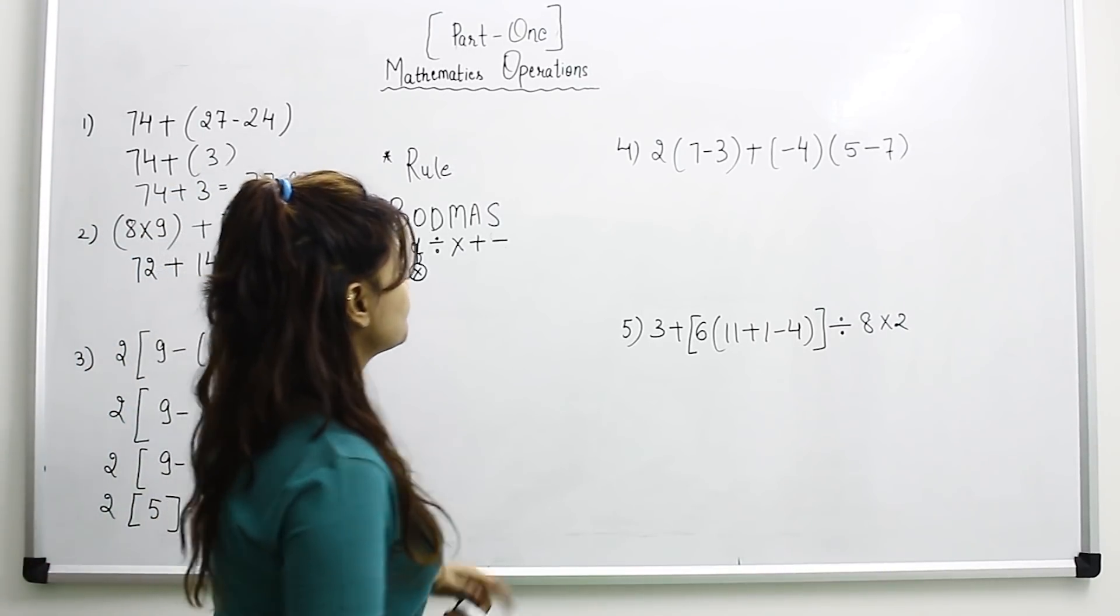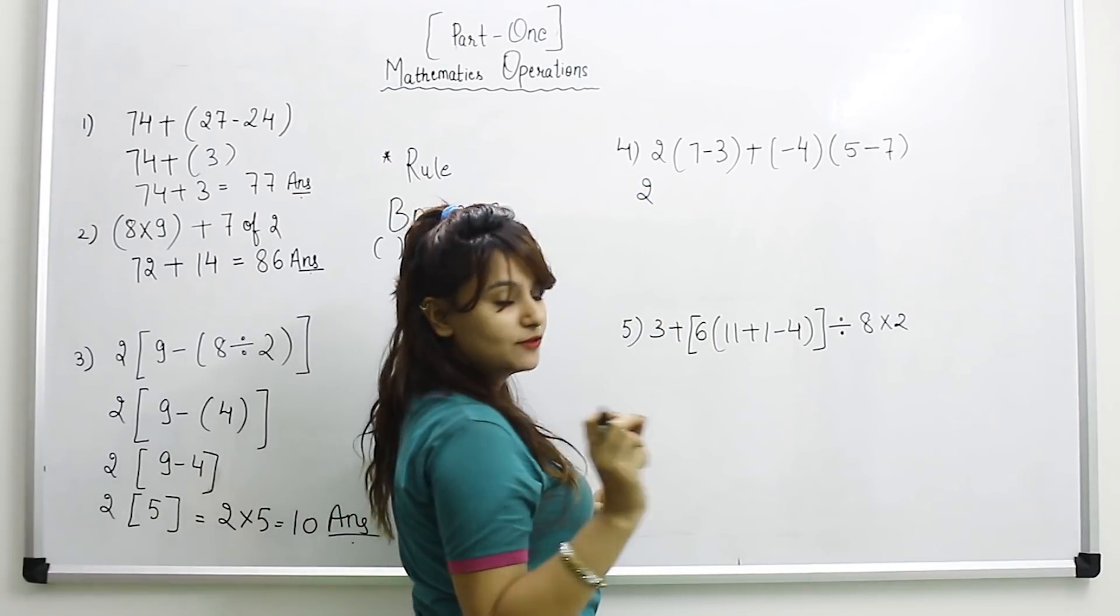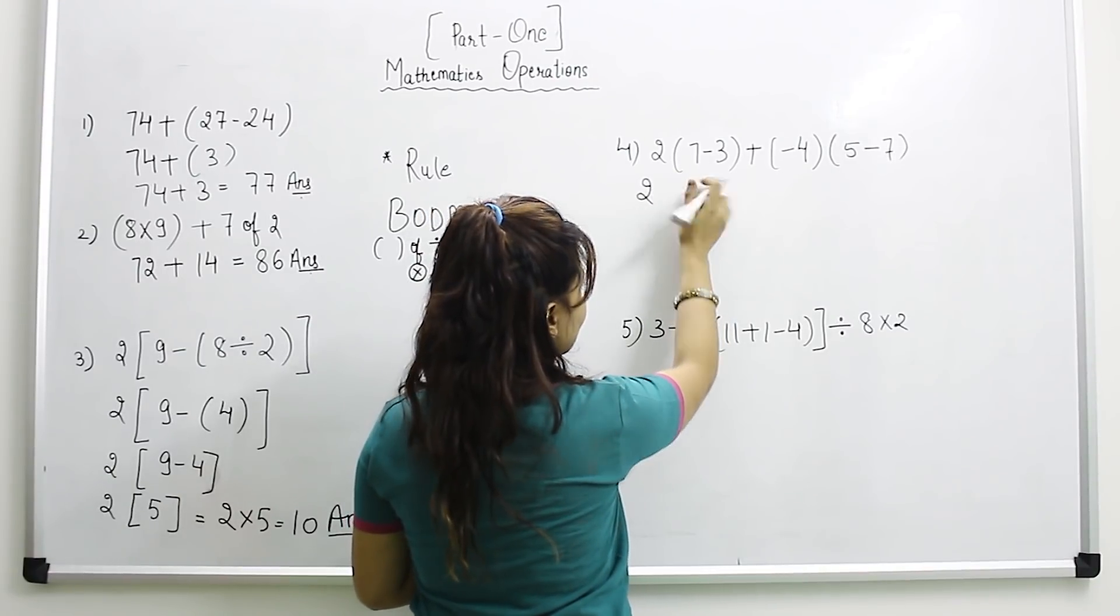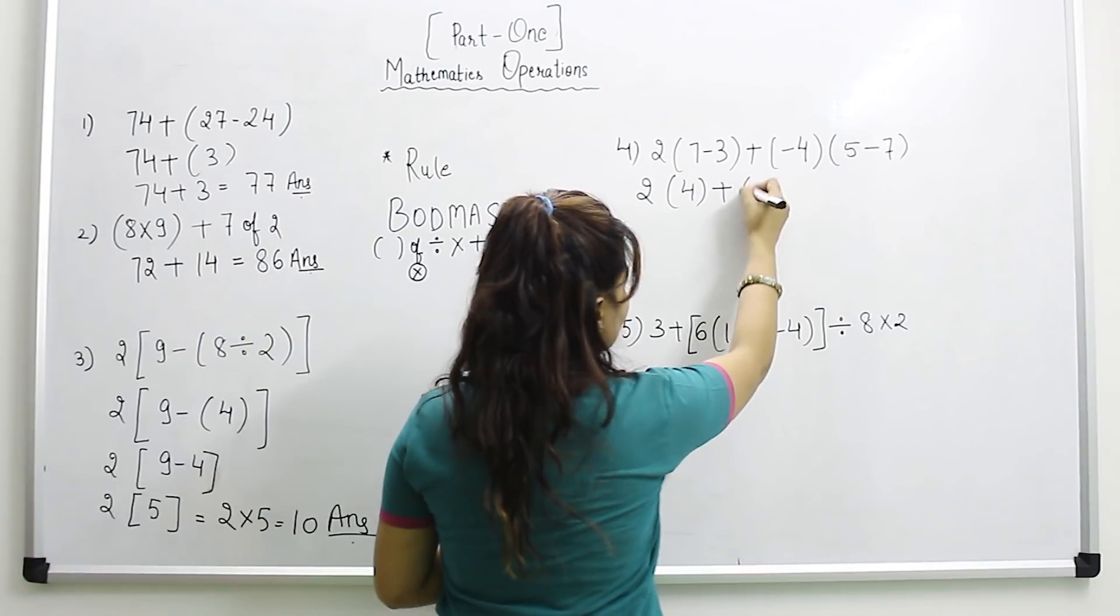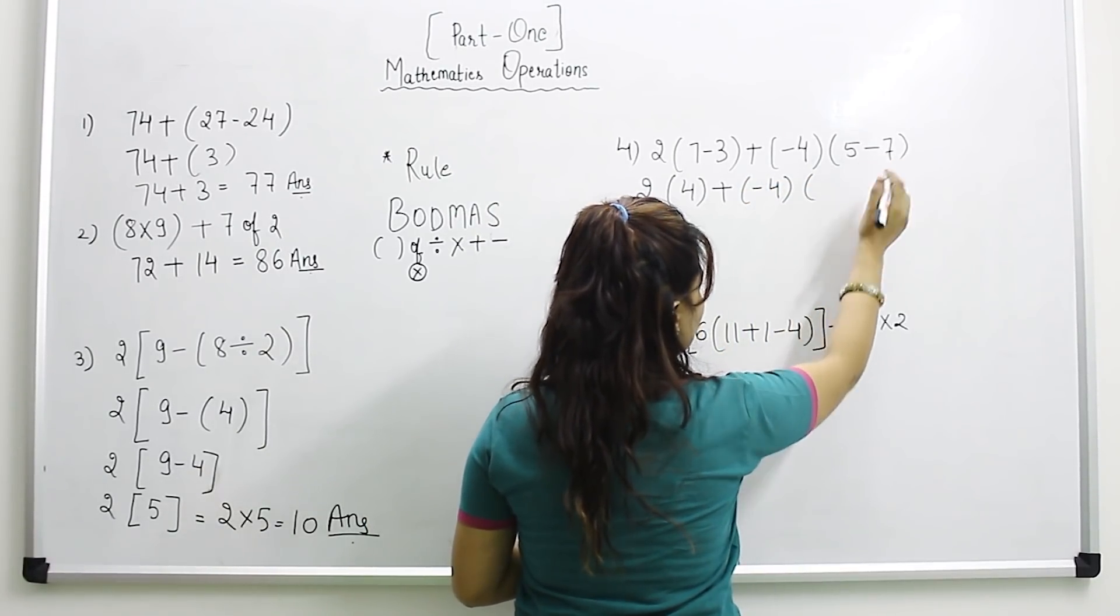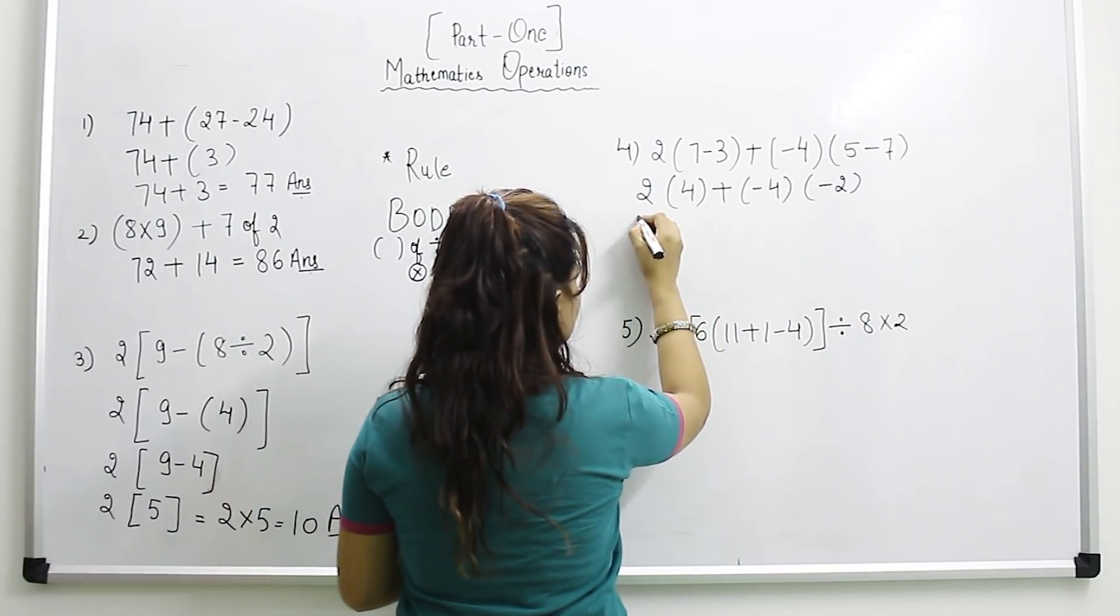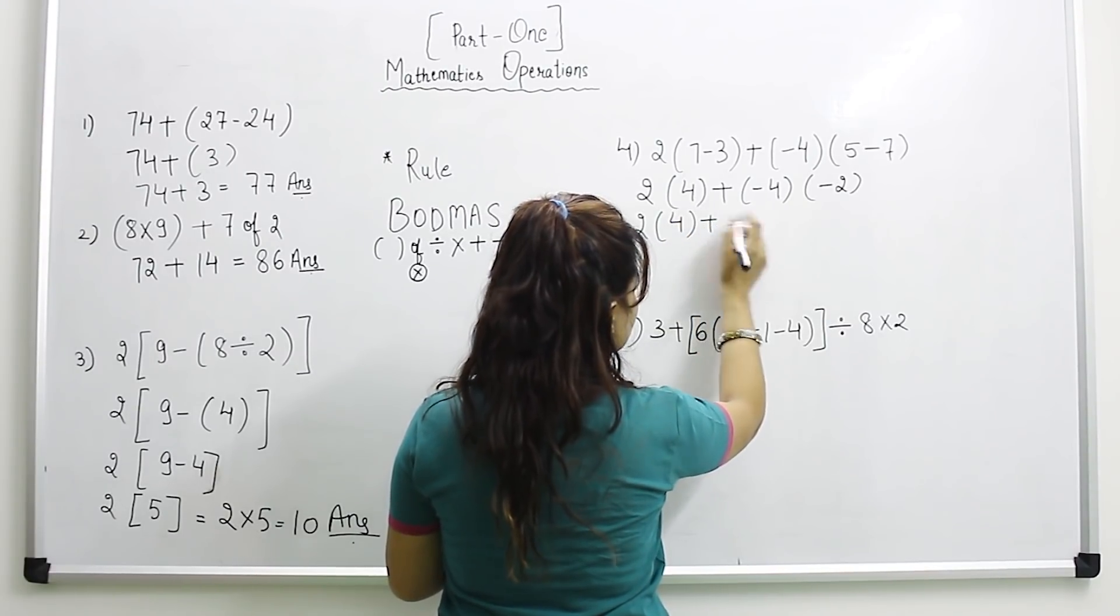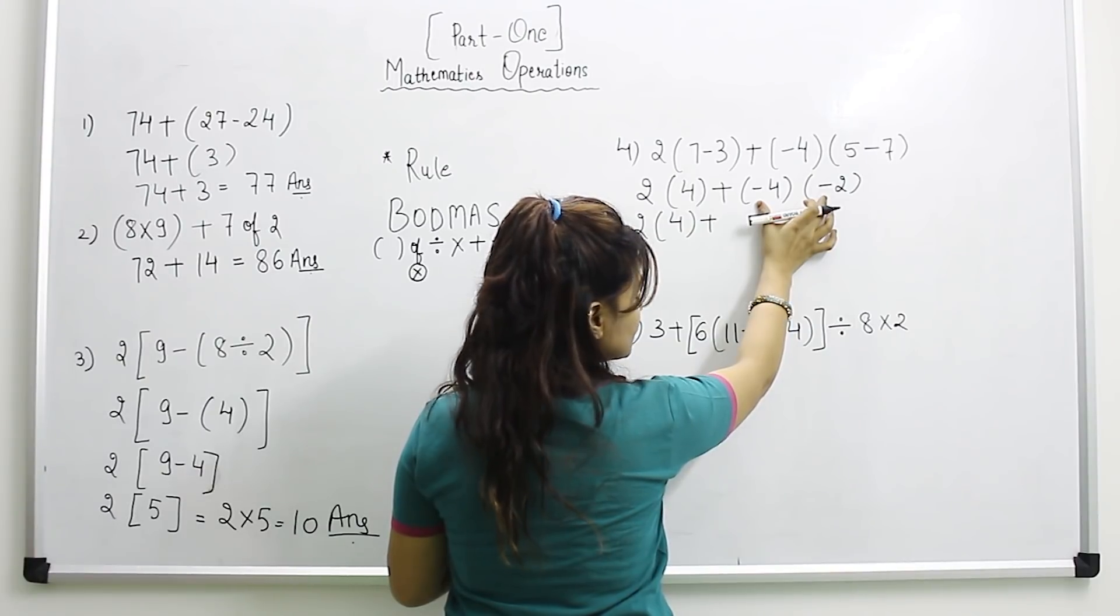Fourth question: solve the bracket first. We will take 7 minus 3 is 4 plus. Then we will take 5 minus 7 equals minus 2. This will remain the same. 4 plus, this is minus, this is minus. When both digits are minus, it means this is multiplication.